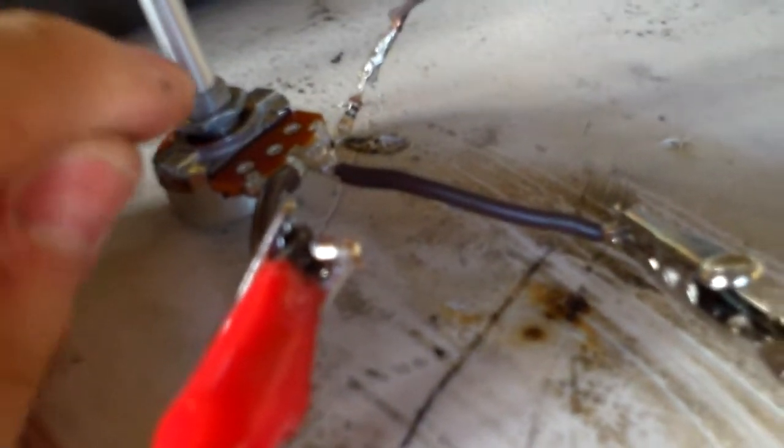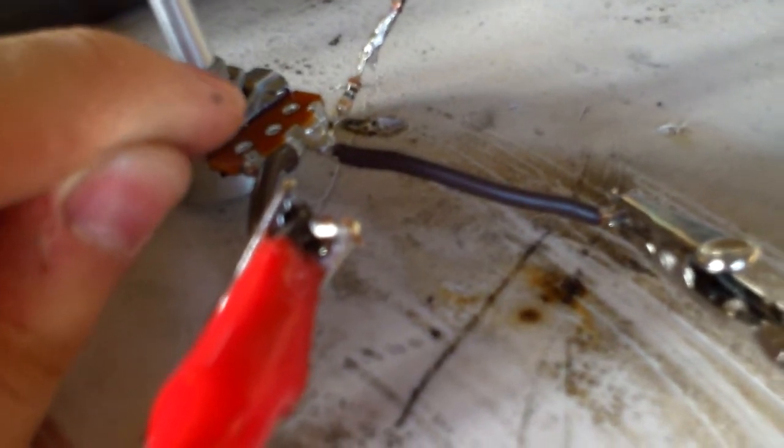Right here is a 50k ohm potentiometer, and this end right here is connected to the ground of the supply, and the other end is connected through a one megaohm resistor to the plus of the supply, which is 300 volts.